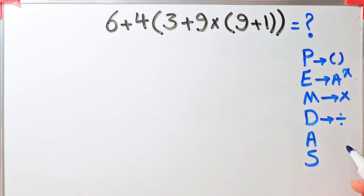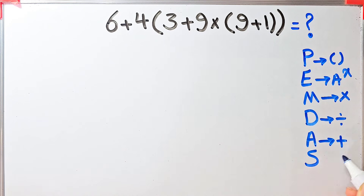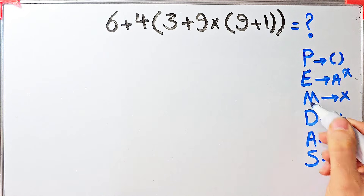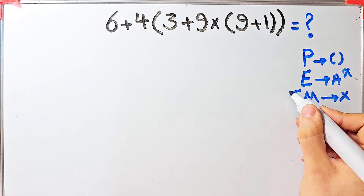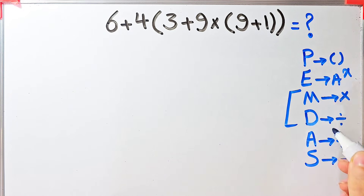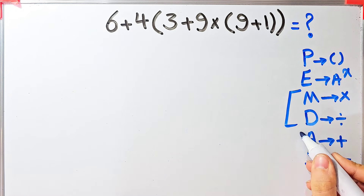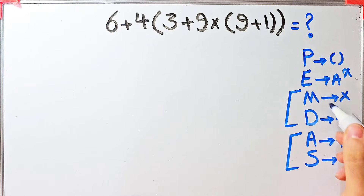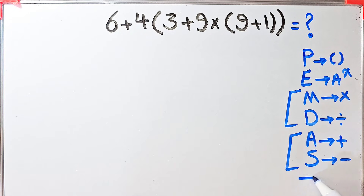A stands for addition and S stands for subtraction. Multiplication and division have the same level of priority. Also, addition and subtraction have the same level of priority, and when we have both in an expression we start from the left and simplify. In this question we have addition, multiplication, and parentheses.